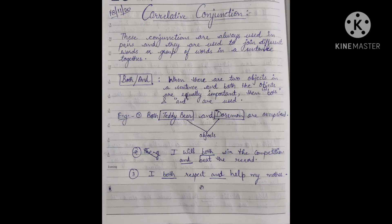Here, teddy bear and Doraemon are the two objects being discussed. The sentence means that both teddy bear and Doraemon are overpriced - costly. Since both have equal importance - whether you take teddy bear or Doraemon, both are valid options - we use 'both...and' as correlative conjunctions.